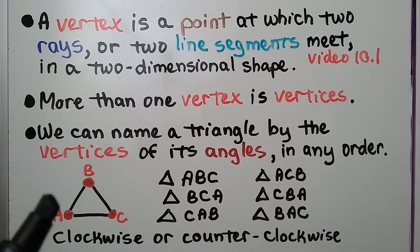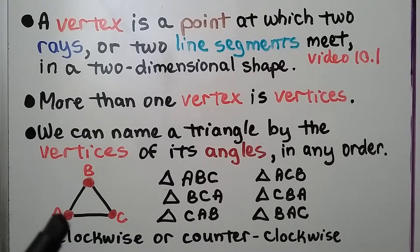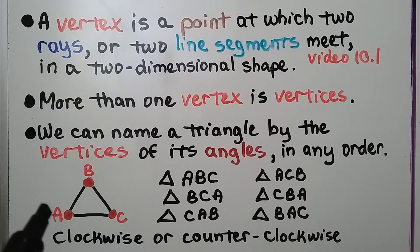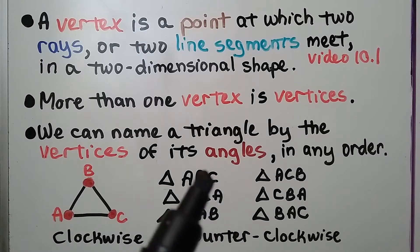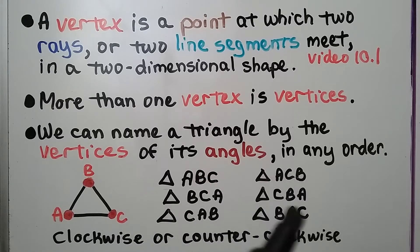Here we have triangle ABC. We have a line segment here and a line segment here — they meet at point A. We can name a triangle by the vertices of its angles in any order. We can go clockwise: ABC, or counterclockwise: ACB. These are all labels for this one triangle. We write a little triangle symbol and then write ABC or ACB to show that it's a triangle and those are its points.